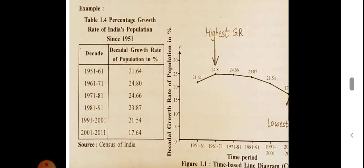We find the slope or curve from the completed diagram. The highest point indicates the highest decadal growth rate of population at 24.80% in the decade 1961–71. The lowest point indicates the lowest decadal growth rate at 17.64% in 2001–2011. It is easy for a person to understand this information by way of diagram.